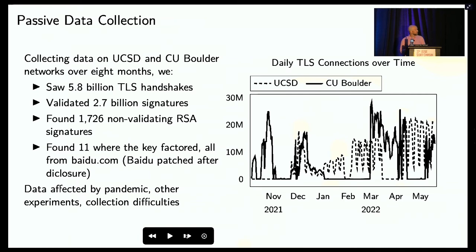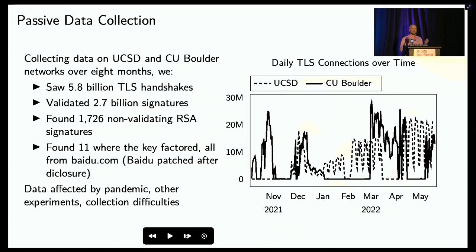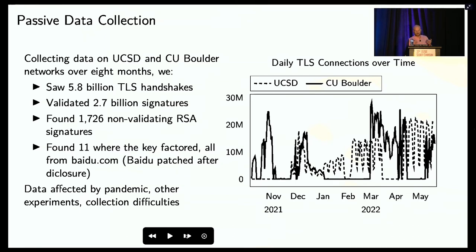Looking at the plot on the right, which shows the number of connections per day with asterisks indicating when we saw factored keys, there are two things to notice. First, the factored keys are all clumped together. We were expecting isolated faults due to cosmic rays or voltage problems, but they're actually tightly clumped, suggesting an ongoing hardware fault. Second, these errors are very rare, highlighting the importance of passive data collection over a long enough period to observe these concentrated, unlikely faults.